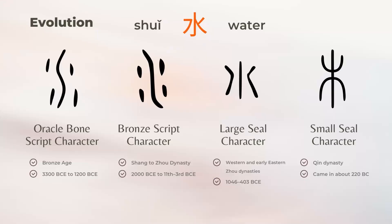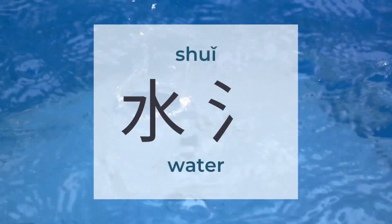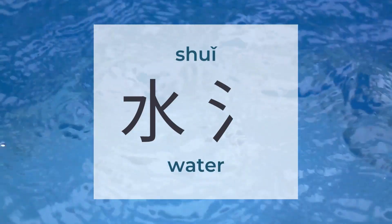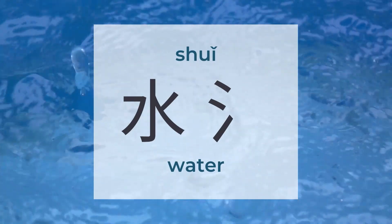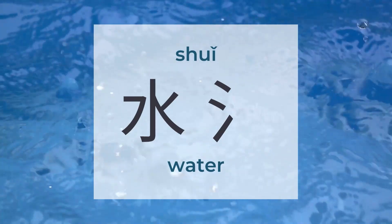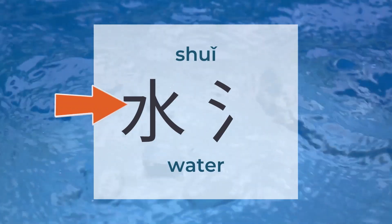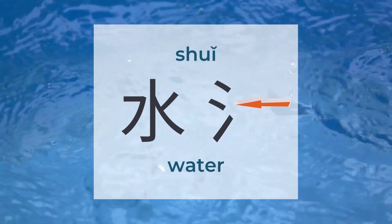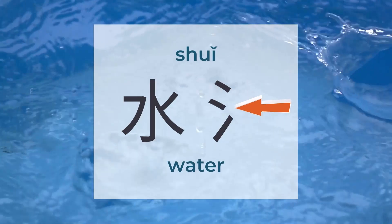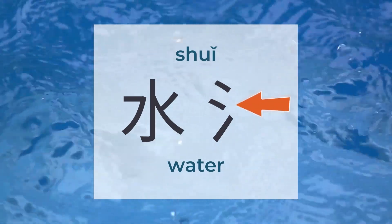水 means water. There are around 1,595 characters to be found under 水. 水 is a pictogram with two forms. One is the complete form 水, while the other is the three-dot form, which shows on the left side of characters.